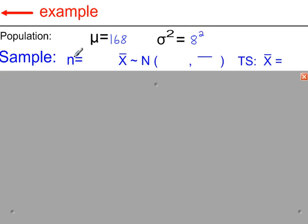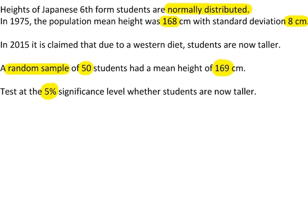The random sample has a size of 50, so the sample mean follows a normal distribution with a mean of 168. And the variance will be sigma squared over n, so 8 squared over 50. The sample mean is 169.